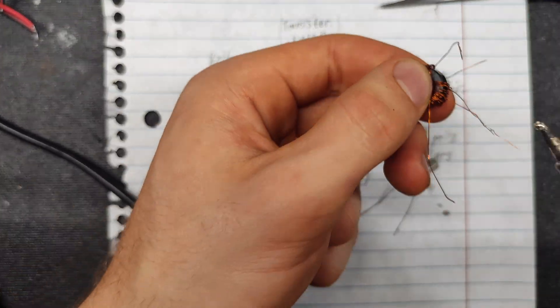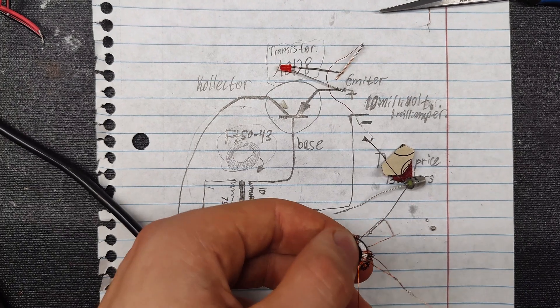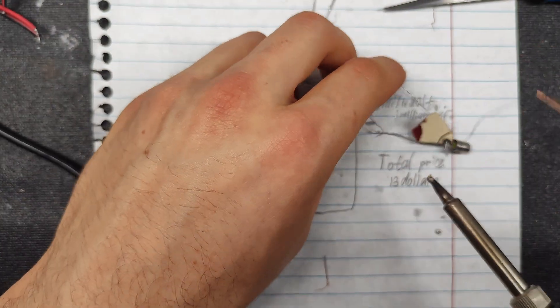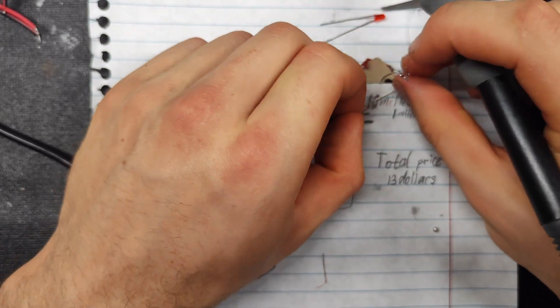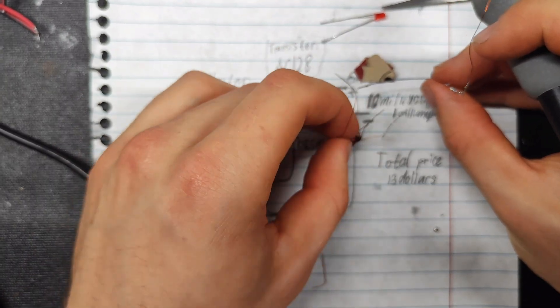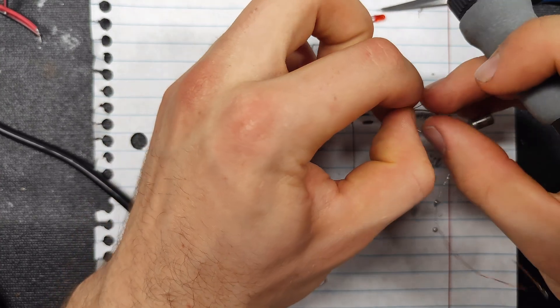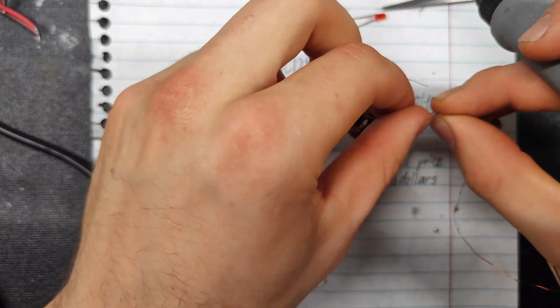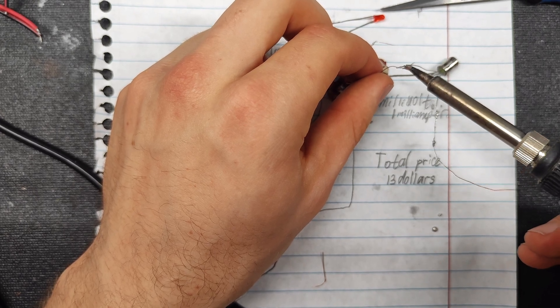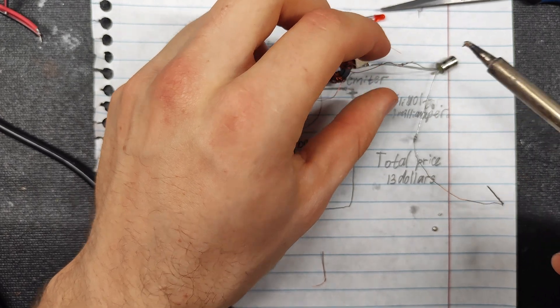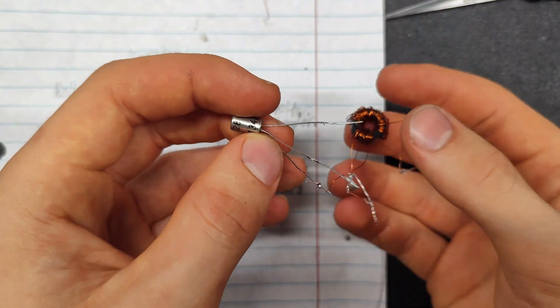I connect this contact with this. Now I'll connect this contact with the base on the transistor. I'm done connecting all the wires.